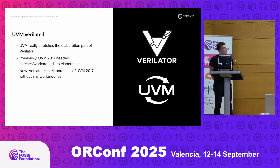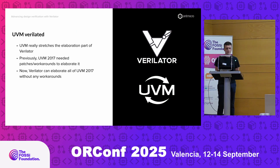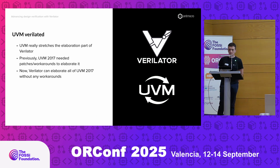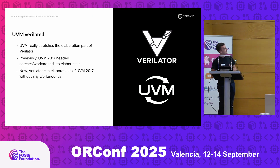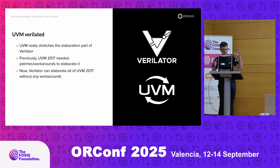UVM has really been tricky to elaborate in Verilator — it really stretches the Verilator muscles in the front end. Previously you had to have a bunch of workarounds in the UVM source code to elaborate it using Verilator, but now you can actually elaborate all of UVM 2017 without any workarounds, as of this week. You can just get it straight from Accelera and elaborate it. This is the effort of not only our team at Entmicro but also Wilson, the lead maintainer of Verilator, so it's a group effort.